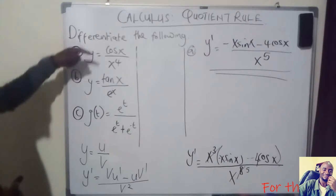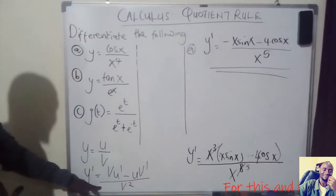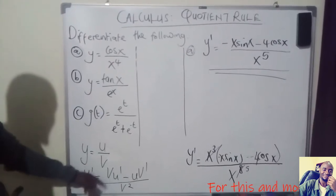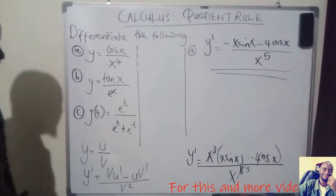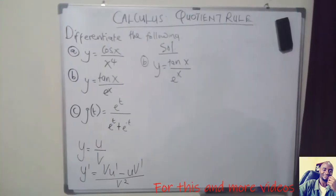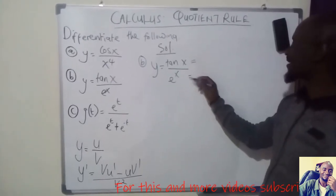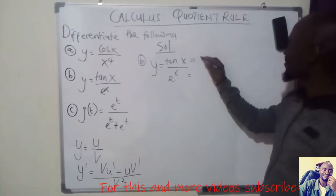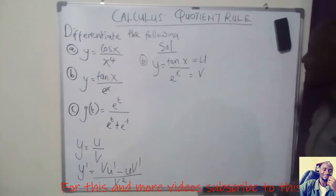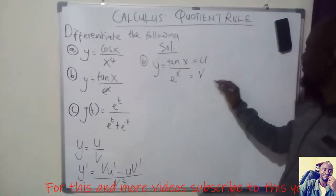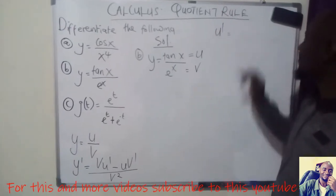So all you need to do is name the numerator as U, the denominator as V, then follow the quotient rule, where U prime means the derivative of U and V prime means the derivative of V. Now we come to problem B. Again you do the same thing: the numerator should automatically be named U, then the denominator named V. Once you do that, you differentiate. So U prime will be equal to...